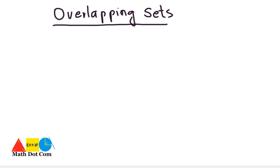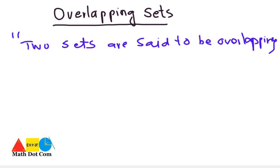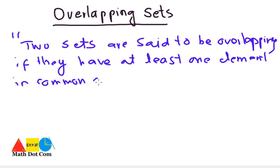Today's topic is overlapping sets. Let's see how it is stated. Two sets are said to be overlapping if they have at least one element in common and none of them are subset of each other.